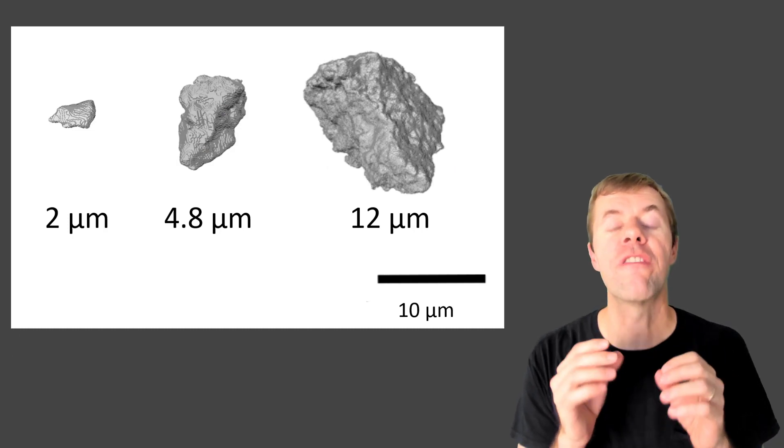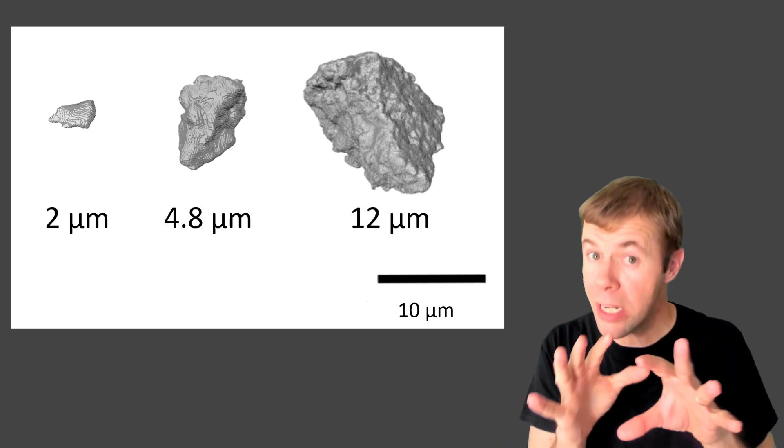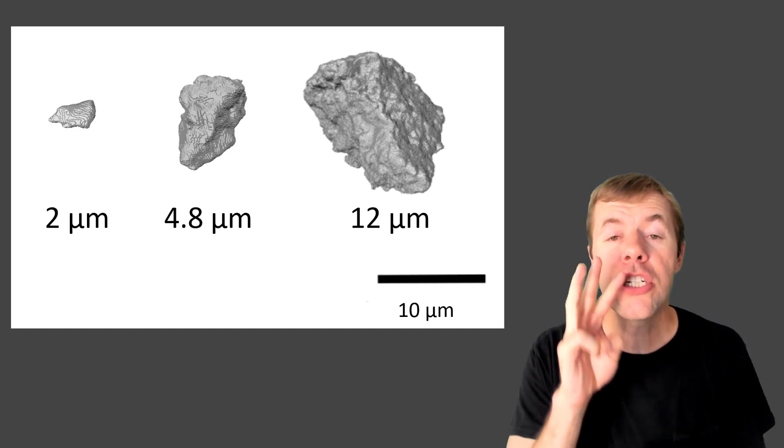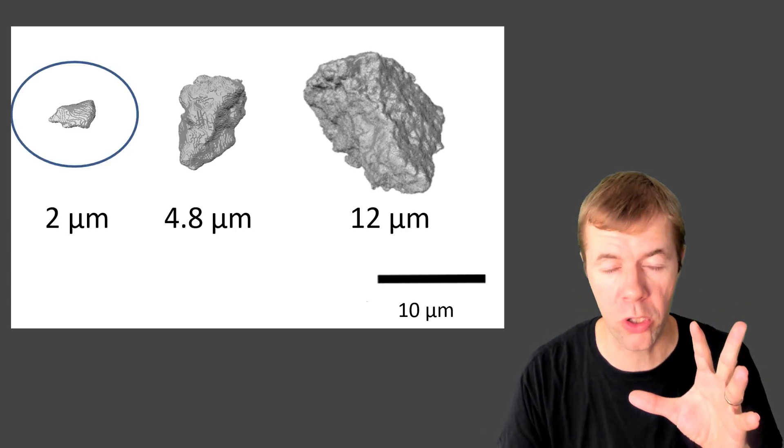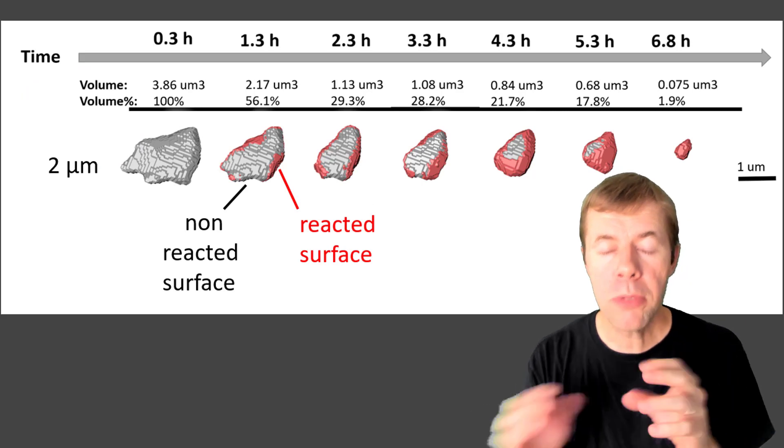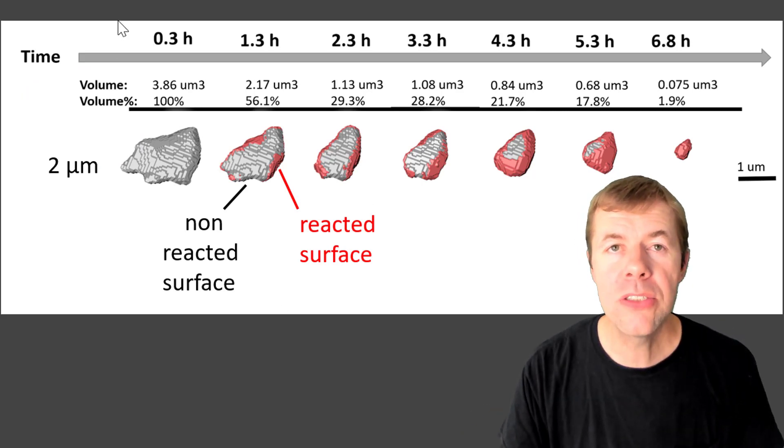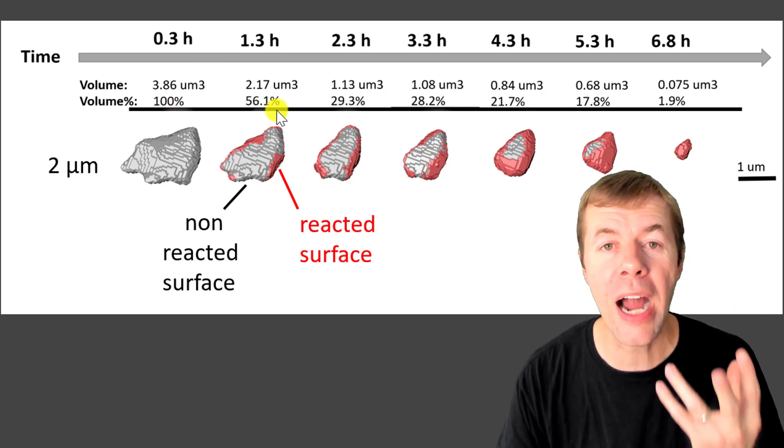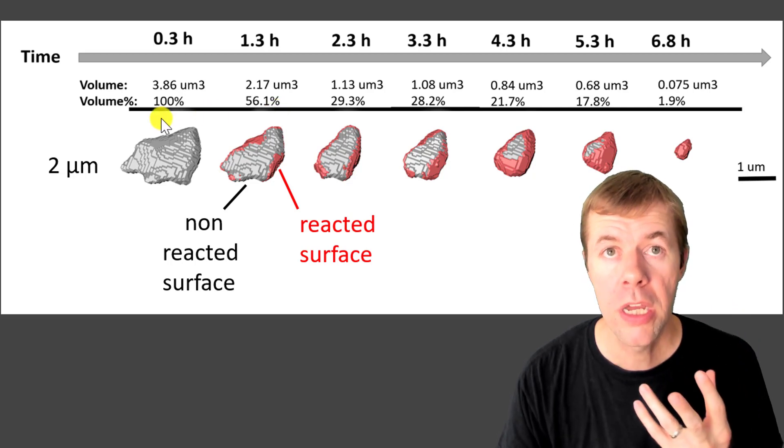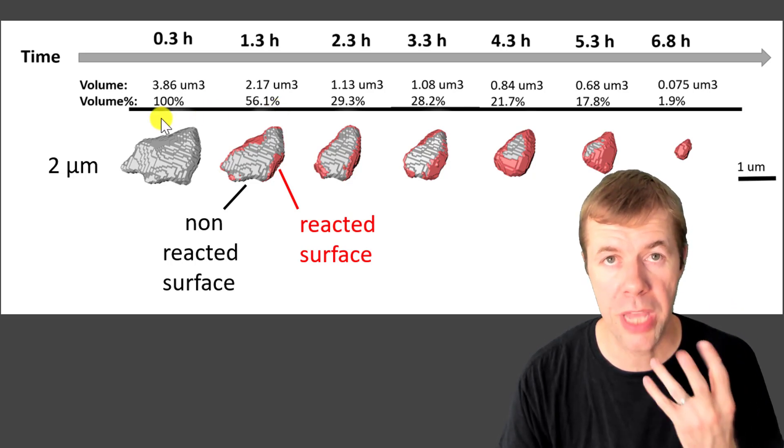We're gonna first follow three separate particles. We'll get into a lot more. First, just three separate ones. And let's start out with the smallest particle and see what happens. Now, what I'm showing on this plot is time at the top. Then I'm showing the volume. This is the original volume at 18 minutes. This is the volume at an hour later. And this is how much that volume has changed. It's lost about 45% of the volume compared to the original scan.